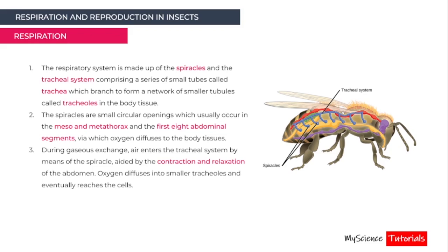Oxygen then diffuses into the smaller tracheoles and eventually reaches the cells of the insect.